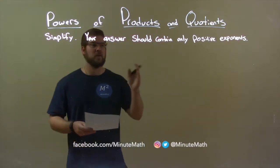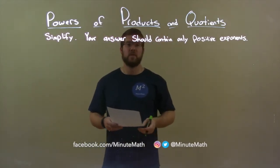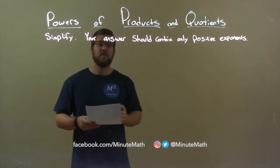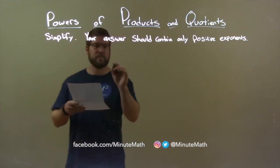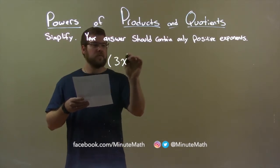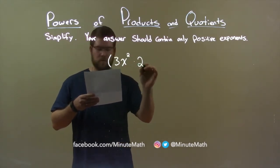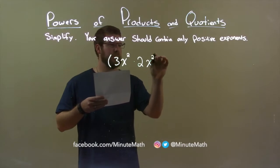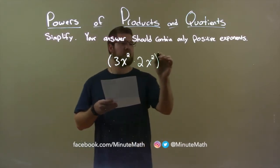Let's simplify, and your answer should contain only positive exponents. So, if I was given this problem, 3x squared times 2x squared, and all of that is raised to the second power.